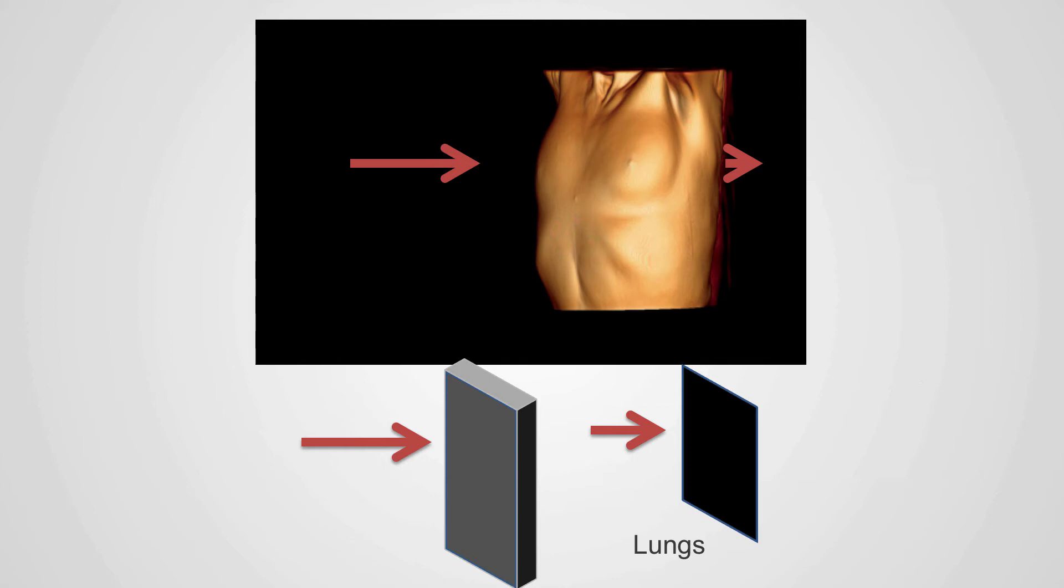If however, the x-ray beam goes through a structure that is very low in density such as lung, very little of the x-ray beam will be absorbed and the resulting image will be black.